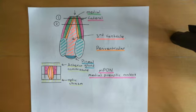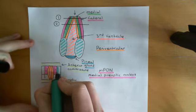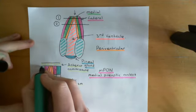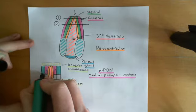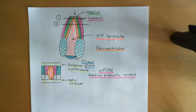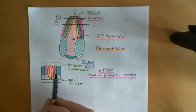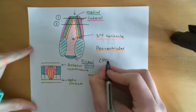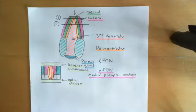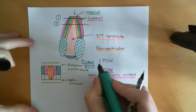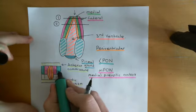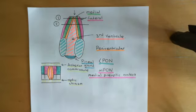Alongside the medial preoptic nuclei in the superior portion of this anterior cross-section are the lateral preoptic nuclei, abbreviated LPON. Again there are two: a left lateral preoptic nucleus and a right lateral preoptic nucleus.